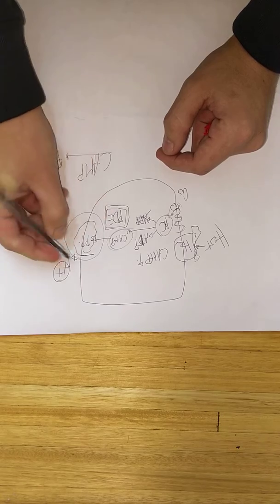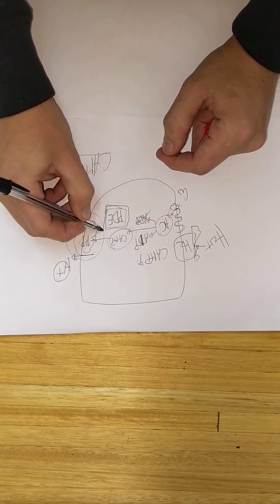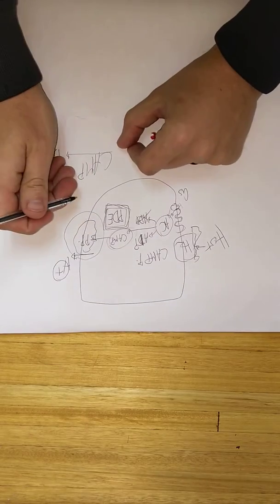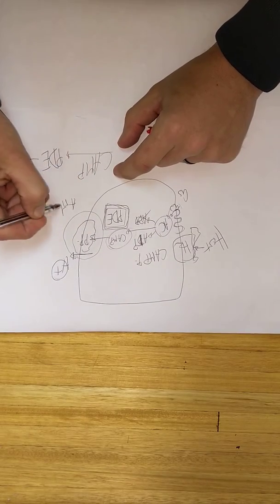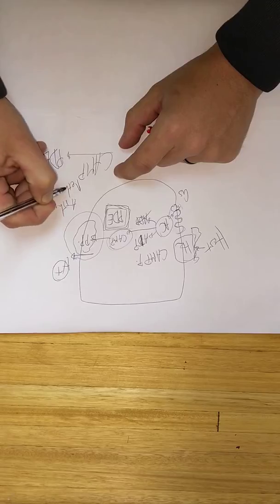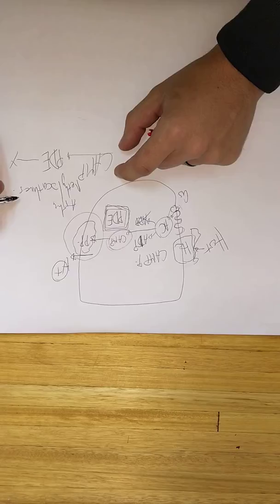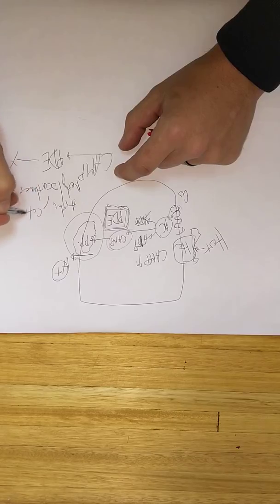And cyclic AMP gets broken down by phosphodiesterase. The reason why I'm mentioning this is that last semester we spoke about asthma, and we spoke about methylxanthines, like caffeine and like theophylline.